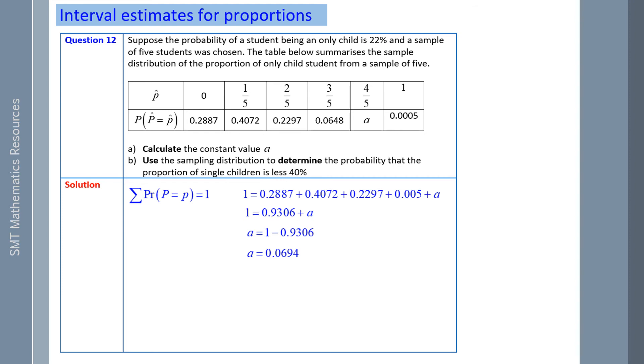Use the sampling distribution to determine the probability that a proportion of single children is less than 40%. So 2 out of 5 is 40%. We want to be less than. So it's this one and this one. So really we're just adding up these two values here. The probability being less than 0.4 is this plus this, which is 69.59%.